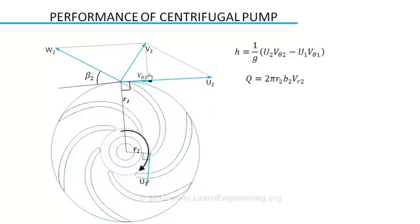At inlet of centrifugal pump flow velocity will be radial, so tangential component of velocity is zero. So energy head developed by the pump simplifies like this.